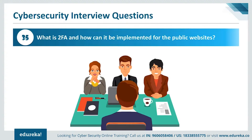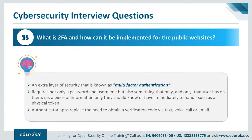Question 35 is: what is 2FA and how can it be implemented for public websites? Two-factor authentication is an extra layer of security that requires not only a password and username, but also something that only that user has on them — a piece of information only they should know or have immediately to hand. Authenticator apps replace the need to obtain a verification code via text, voice call, or email. For example, to access a website supporting Google Authenticator, the user types in their username and password — that is the knowledge factor.